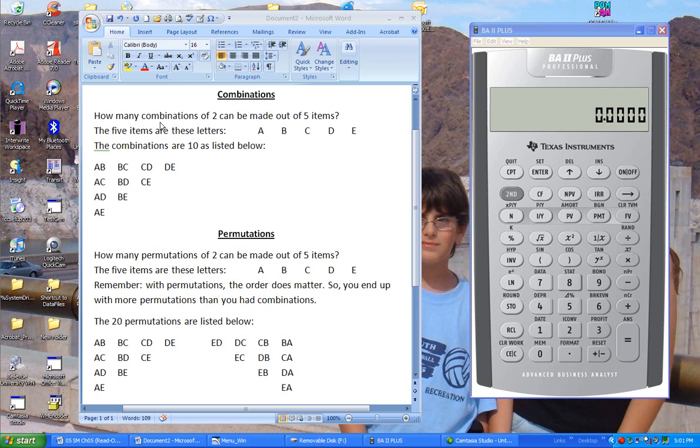Combinations tell us how many groups of lowercase n can be made of uppercase n. For example, how many combinations of 2 can be made out of 5 items? Let's say the 5 items are A, B, C, D, E.